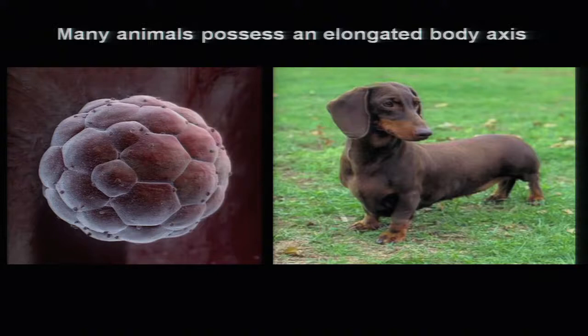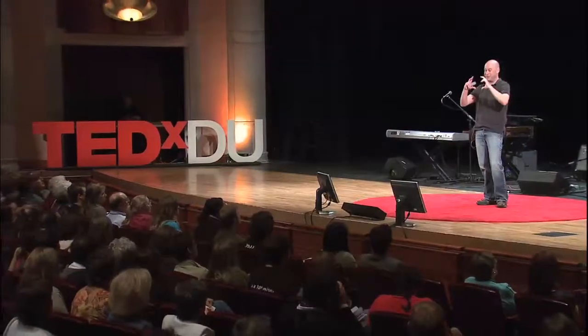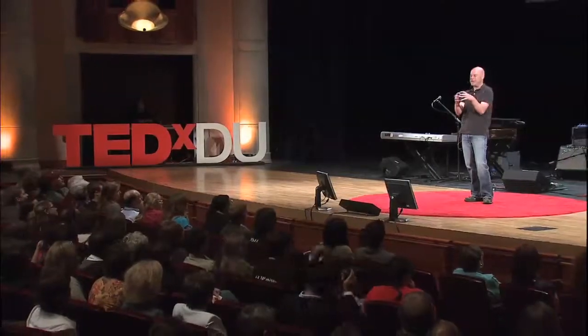What we've chosen to focus on is something common to each and every one of these organisms. Each and every one of them is elongated along one axis — almost every higher animal is elongated along the head-to-tail or anterior-to-posterior axis. This poses an interesting question: everyone here knows you started out as a single cell — sperm fertilized an egg, made a cell, usually spherical, which then divided to make a clump of cells. So how does that sphere of cells get turned into something elongated enough to make a dachshund?